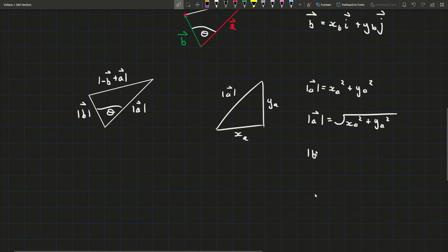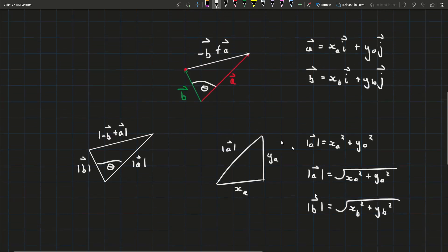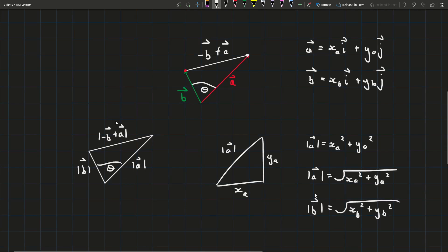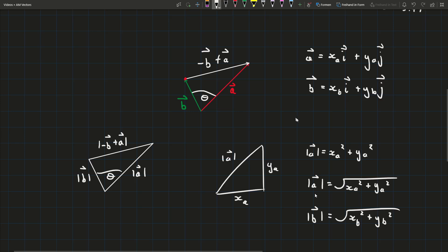So vector b then will be equal to the square root of the x component squared plus the y component squared. And now for vector minus b plus a we need to do a little bit more so we need to first write it as a vector which I should have done earlier.